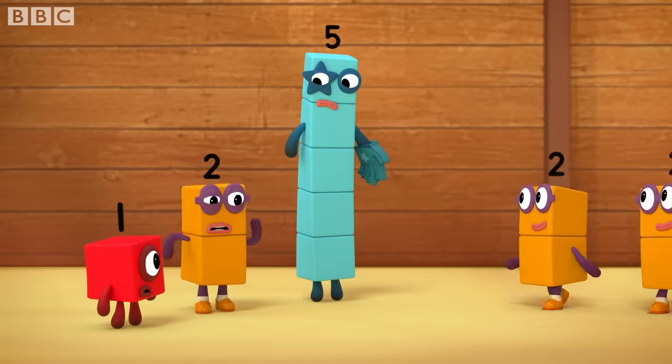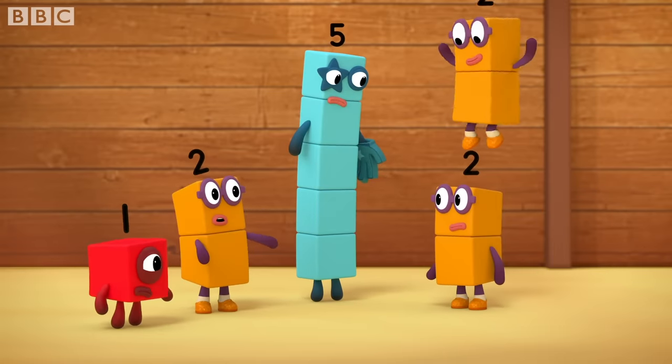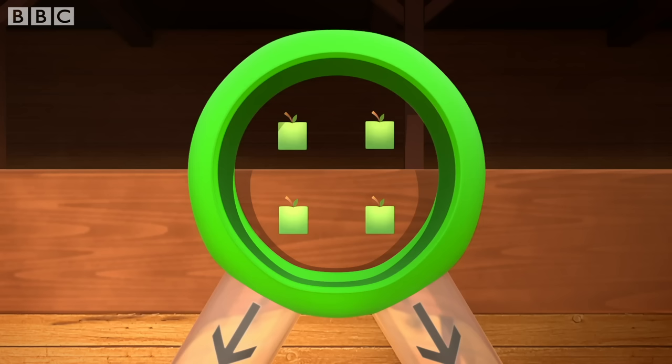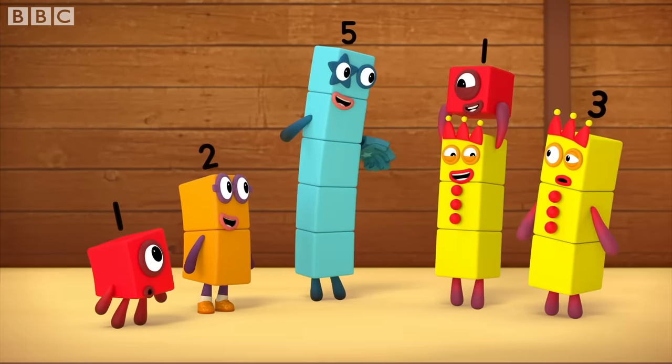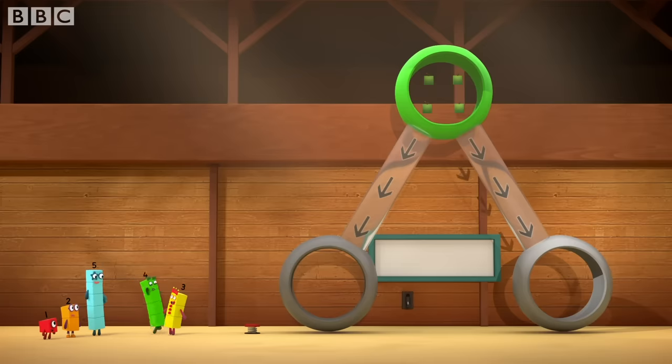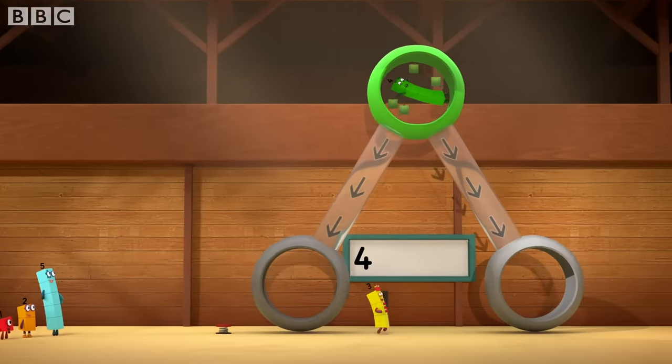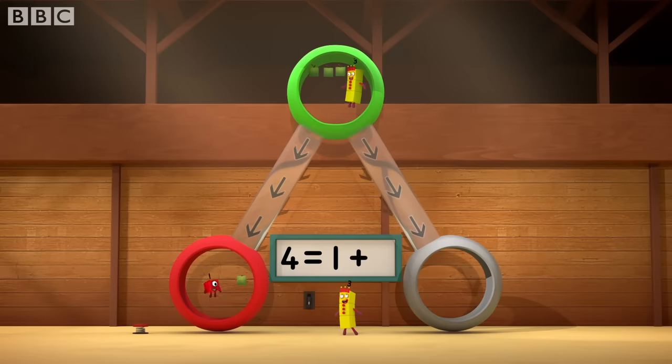Poor three. We need to find a way to make three apples come out. Oh! Look! Four new apples are the same. I know how to make three. Here I go! Four equals one plus three.